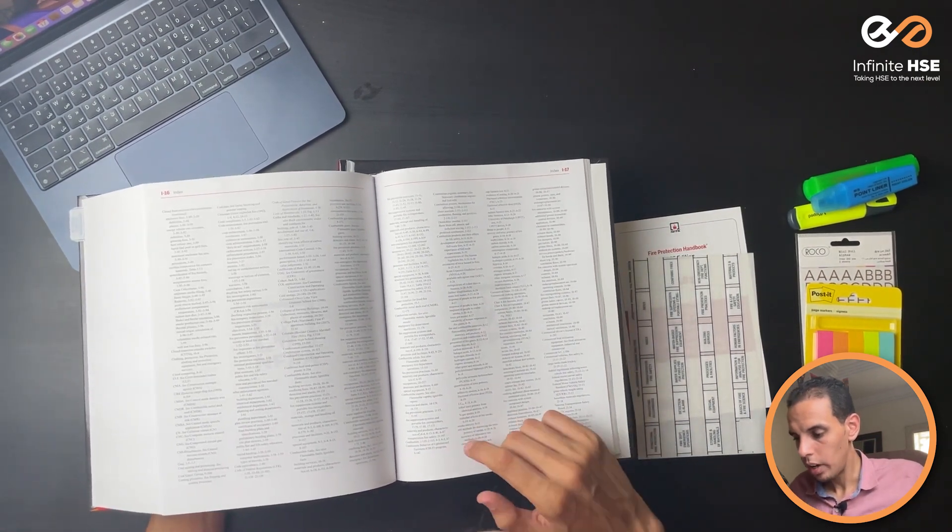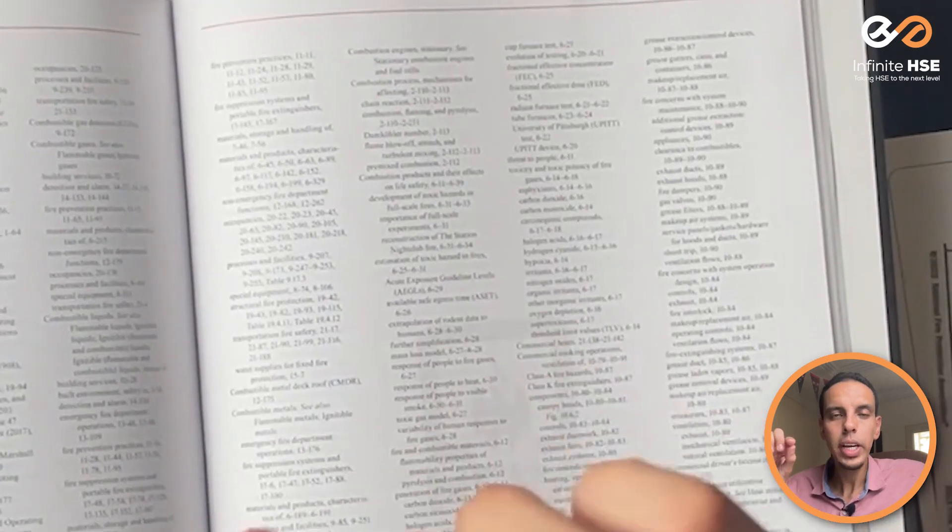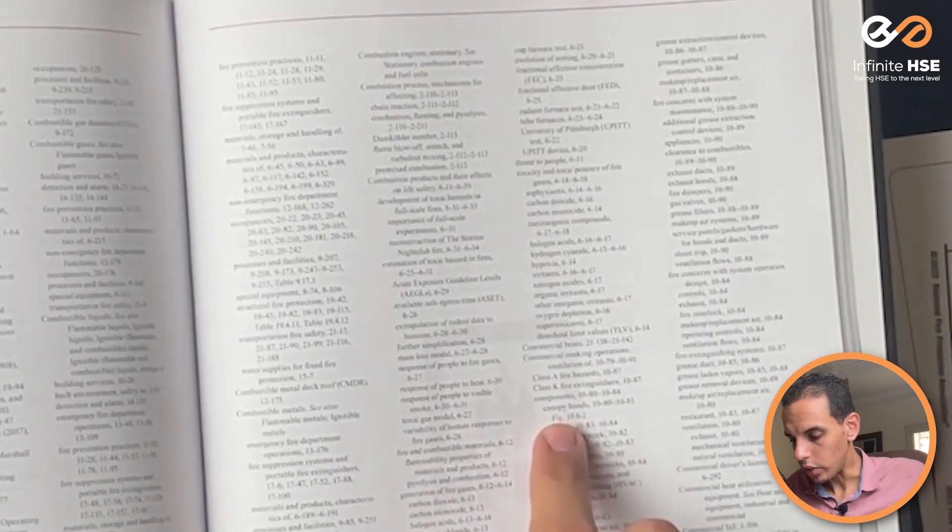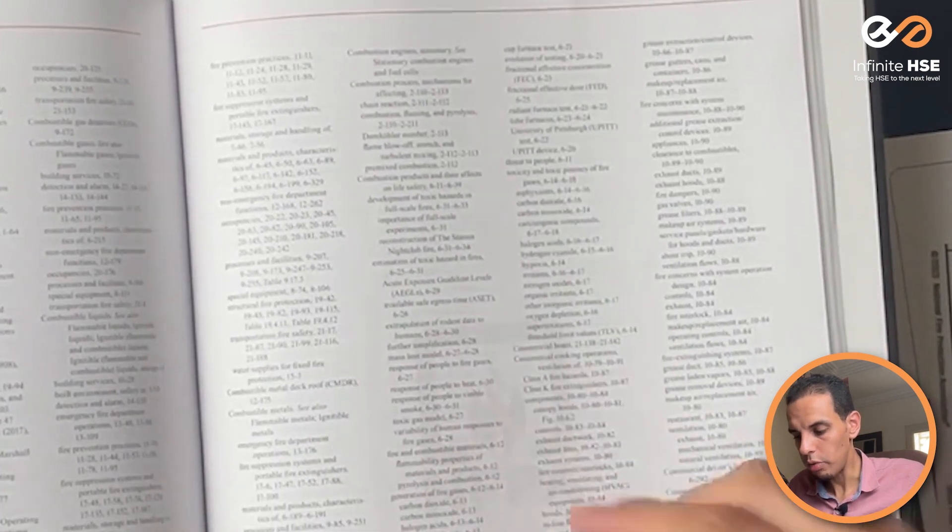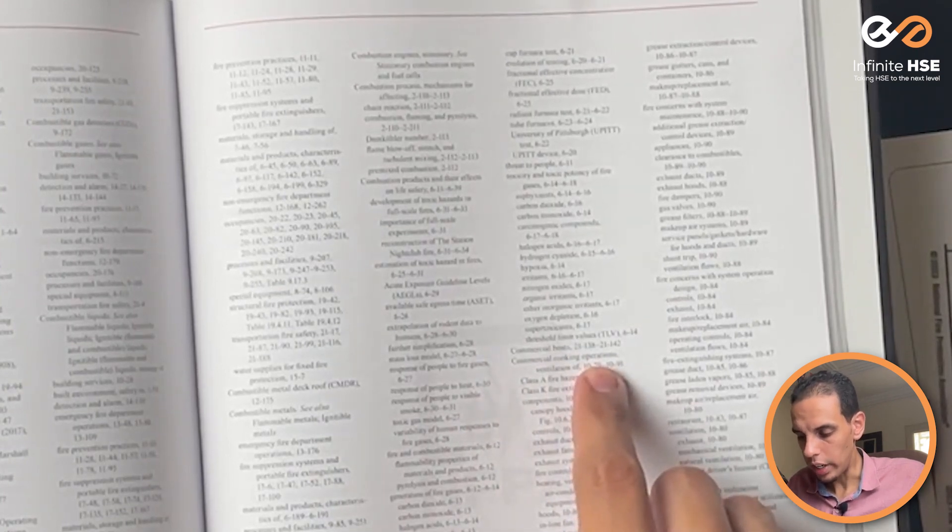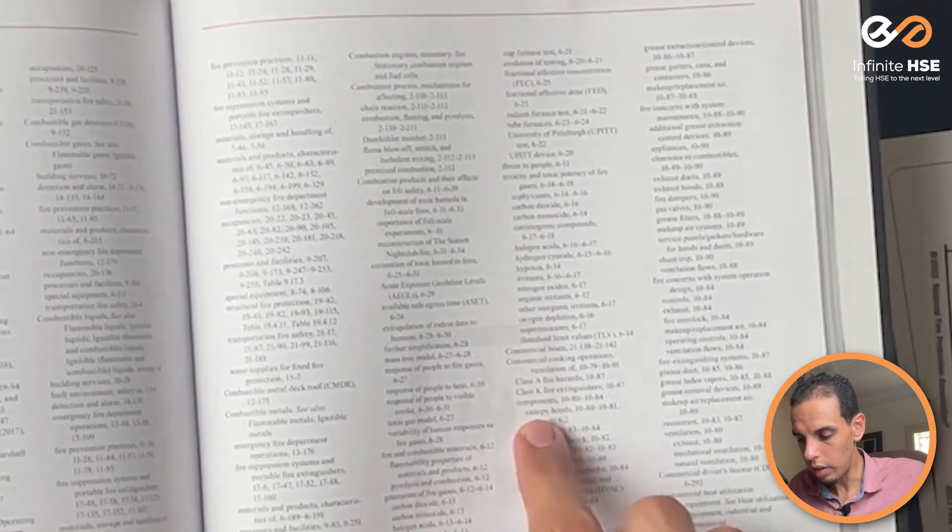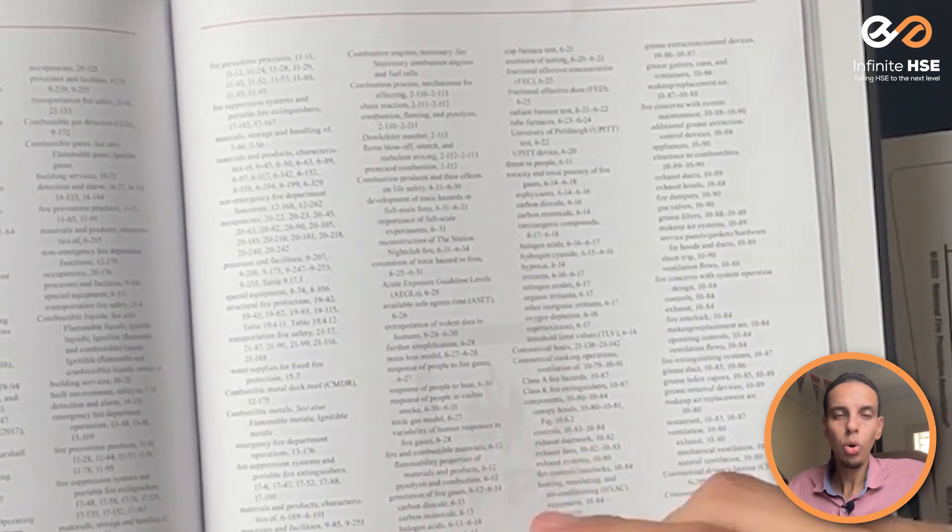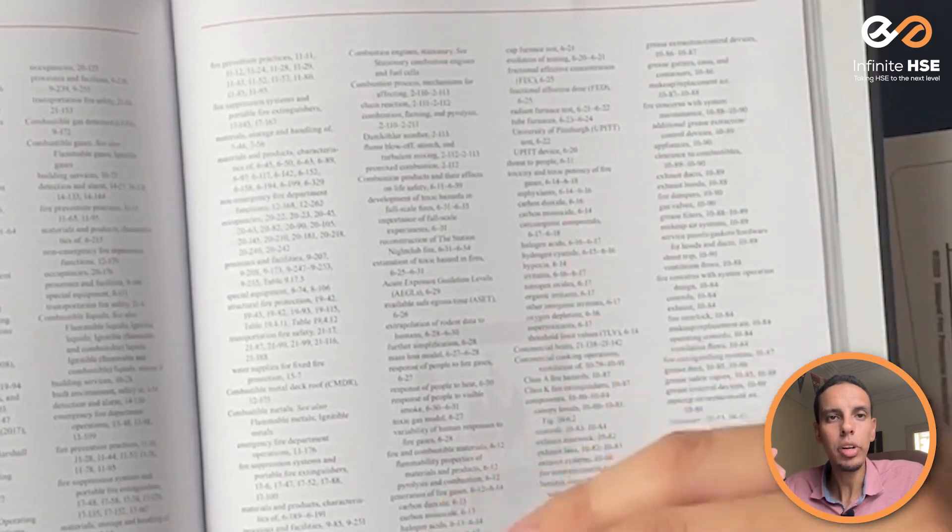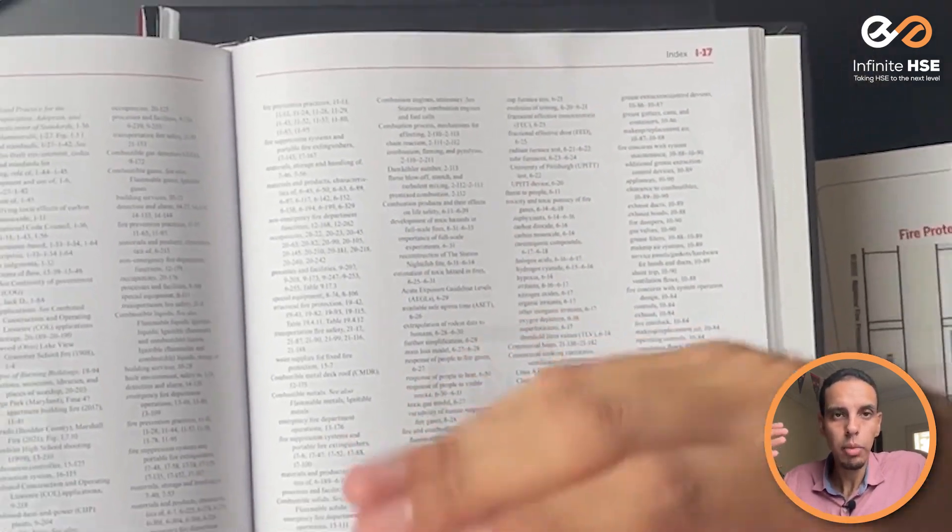But we have to take into consideration one thing. For example, if we go for Commercial Cooking Operation, Ventilation of, this is the main keyword. Under this keyword, you will find another level. For example, Components. This is another level, the components of Commercial Cooking Operation, Ventilation of. And under Components, you will see another third level - Canopy Hood Controls, Exhaust Duct Work. So we have for some keywords three different levels for each keyword. So how can we deal without making ourselves confused about these levels?